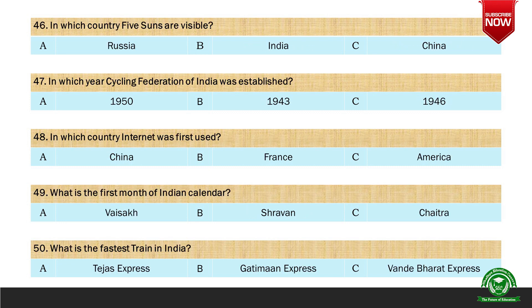Next question: In which country are five suns visible? Options are A. Russia, B. India, and C. China. And the right option is C. China.